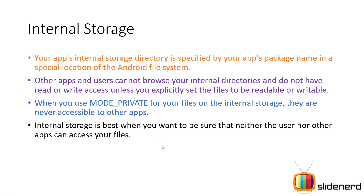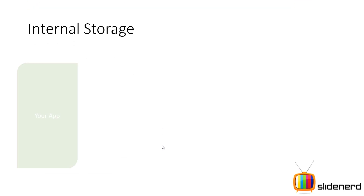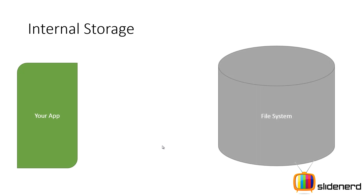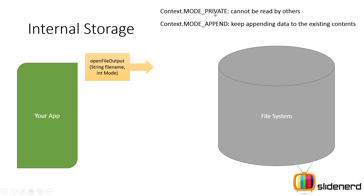Internal storage is best when you want to make sure that neither the user nor other apps can access the files — only your app works with those files internally. To store a file, you call the openFileOutput method, specifying two things: the file name and the mode. The mode can be MODE_PRIVATE, meaning it cannot be read by others, or MODE_APPEND, which keeps adding data to the existing contents. By default, MODE_PRIVATE will override whatever was already in the file on every new write.